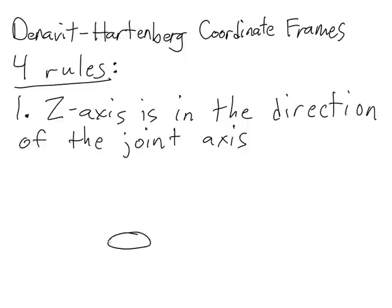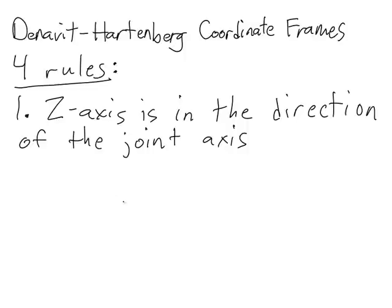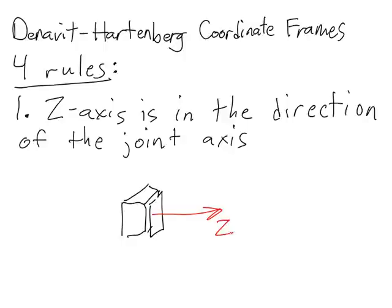If the revolute joint looks like this, the z-axis would be pointing either into or out of the page, because the direction of rotation is either this direction or this direction. For a prismatic joint, the z-axis is the direction of motion. Here I've shown a prismatic joint where the direction of motion is to the right, so I will draw the z-axis as being to the right. The direction of the z-axis is always defined by the joint. Once we have the z-axis defined, we move on to the x and y-axes.